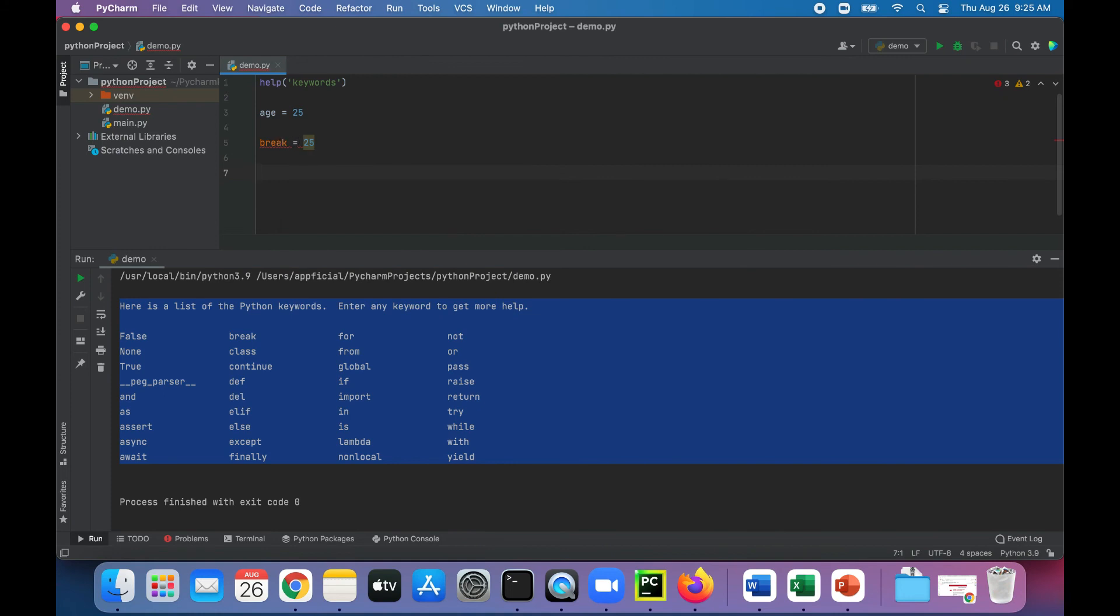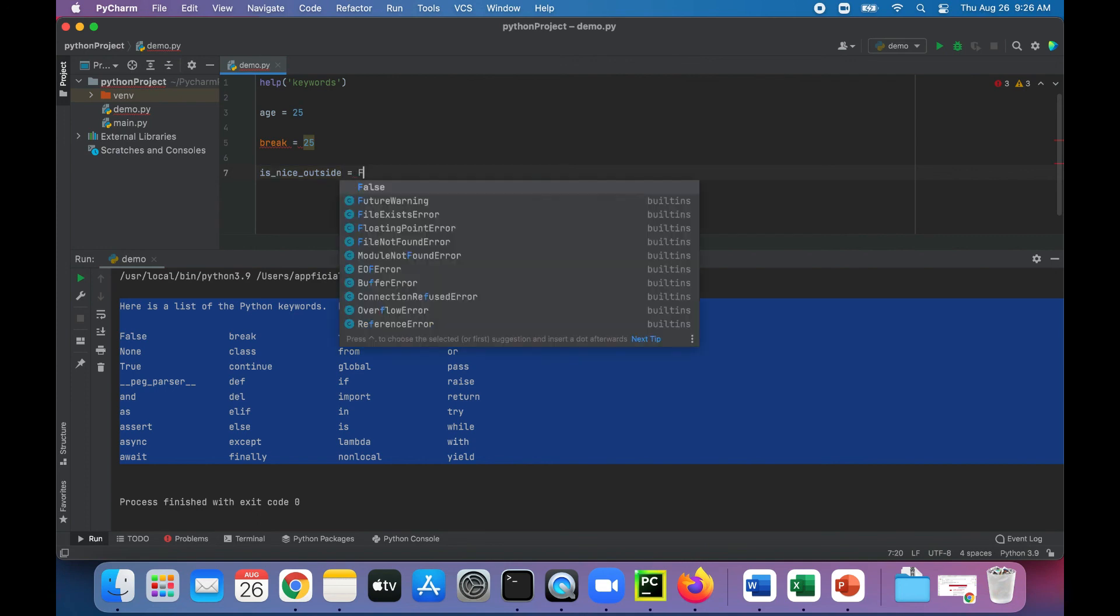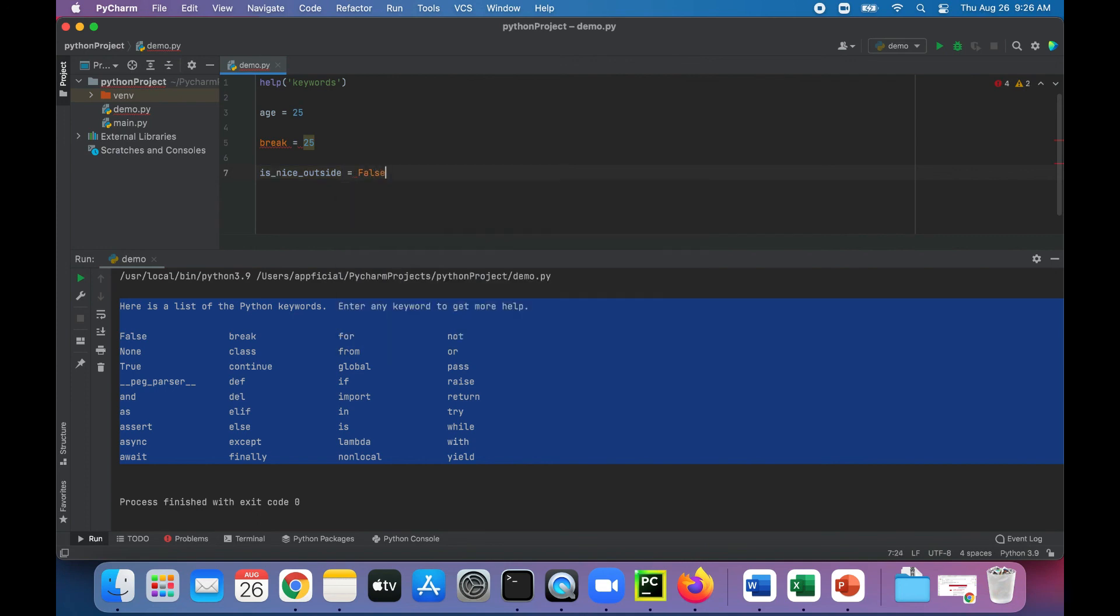Let's try another keyword. The very first one on the list is false, that is for boolean variables, meaning something can be either true or false. Is_nice_outside sounds like a question, let's set that to false, and that also made it purple. I don't get any errors because I'm using that keyword in the correct way.